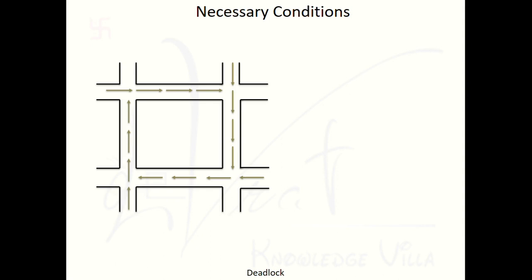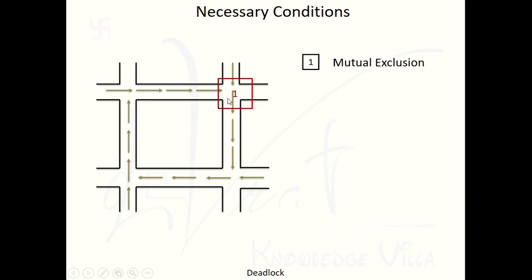Let's see one by one. Suppose we start from this junction — these vehicles are traveling in this direction. This junction is held by these vehicles and the other vehicles are waiting. Mutually they are using this junction, and this junction is in non-sharable mode. So the first condition is mutual exclusion — mutually these vehicles are holding this junction. If other vehicles try to hold this junction at the same time, it will lead to an accident.